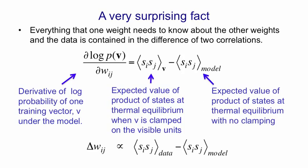Because the derivative of the log probability of a visible vector is this simple difference of correlations, we can make the change in the weight be proportional to the expected product of the activities averaged over all visible vectors in the training set, that's what we call data, minus the product of the same two activities when you're not clamping anything, and the network has reached thermal equilibrium with no external interference.